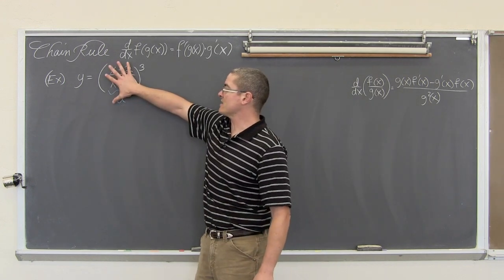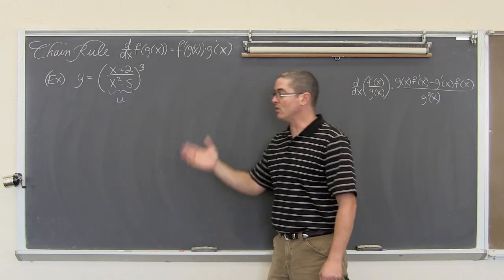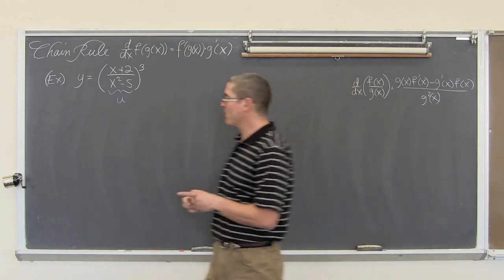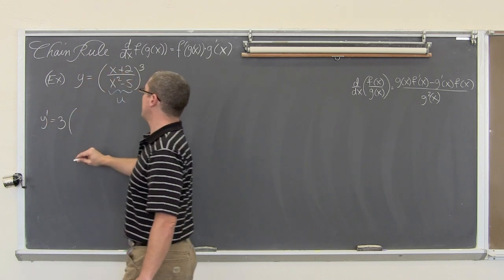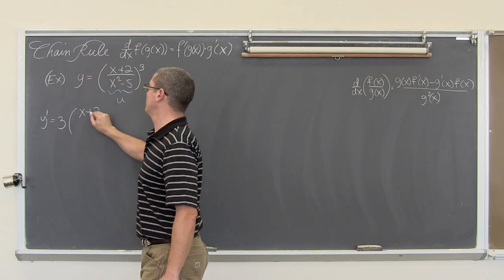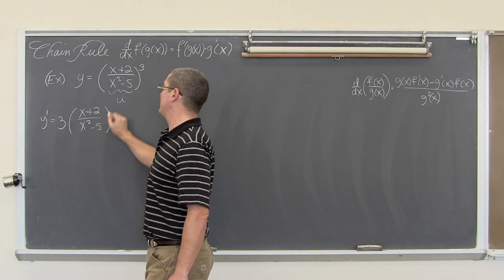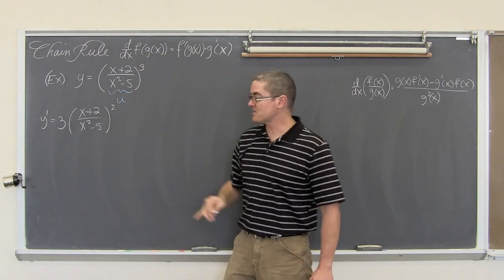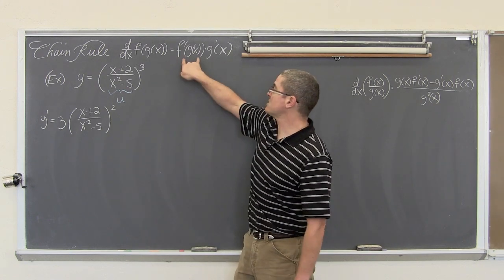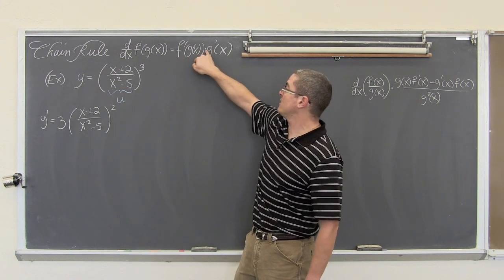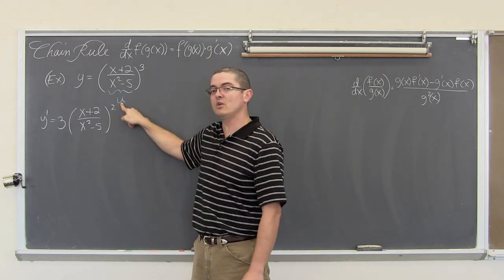So we have a big chunk of something raised to the third power. We are going to use the general power rule and say that y prime is equal to 3 times x plus 2 over x squared minus 5, raised to the second power, because we bring that power down by one. This is the chain rule. Now we have to multiply by the derivative of the inside function.